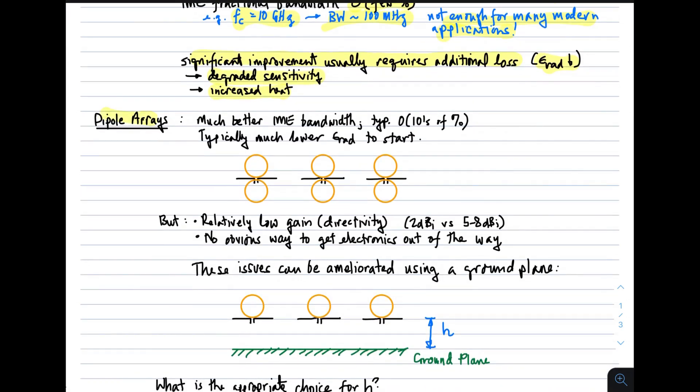A common alternative is a dipole array. A dipole as an element has a much better impedance match efficiency in terms of its fractional bandwidth. Typically, instead of just a few percent, it's typically tens of percent. So it would not be unusual for a dipole array to start off with an impedance match efficiency which is already on the order of ten times greater than that of a patch array in very round numbers. Also, dipoles have intrinsically higher radiation efficiency to start.